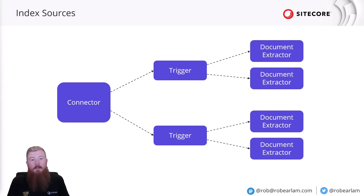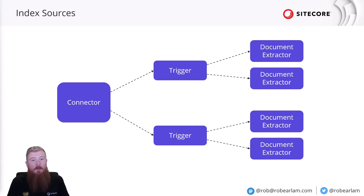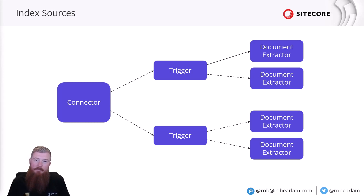The triggers are responsible for finding all the different documents that are to be extracted. Finally, the documents found by the triggers are then passed to a series of document extractors. A document extractor is responsible for taking one or more documents returned by the trigger and mapping its data to the attributes defined for the domain, which we looked at in a previous video.